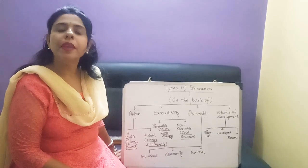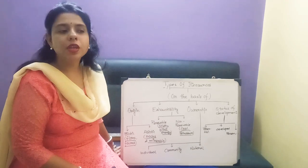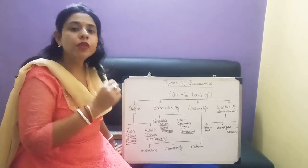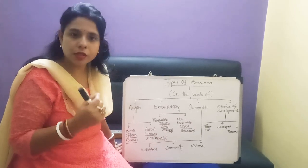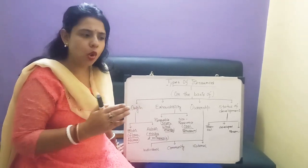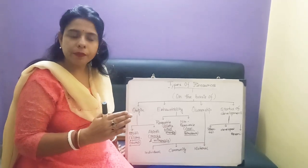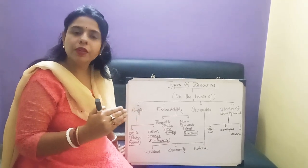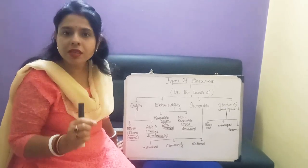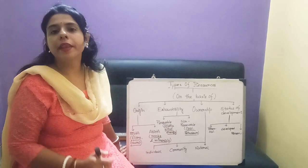The third criteria is economic cost or economic feasibility. A resource should have economic cost — when you transform a substance to a resource, that should have economic cost. For example, when you generate thermal power from coal or hydro power from water, there should be a cost. So resource has three distinct criteria: first, it meets human beings' needs; second, accessibility of resource; third, economic cost or economic feasibility.